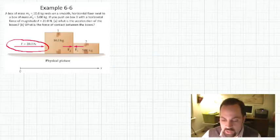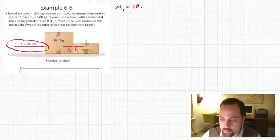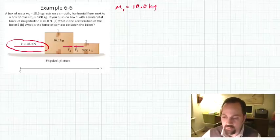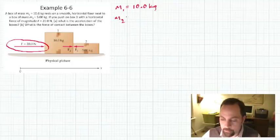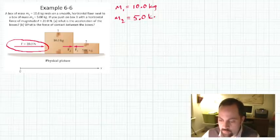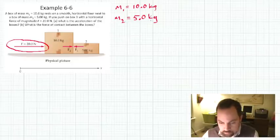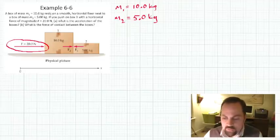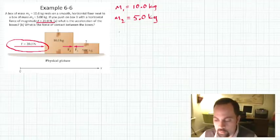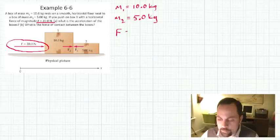We're told that one of the boxes has a mass of 10 kilograms — mass 1 is 10 kilograms — and mass 2 is 5 kilograms. The external force equals 20 Newtons.